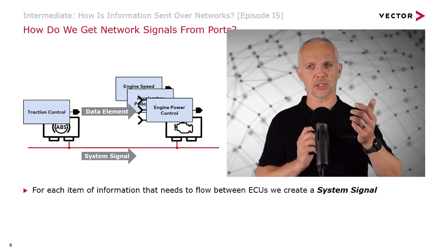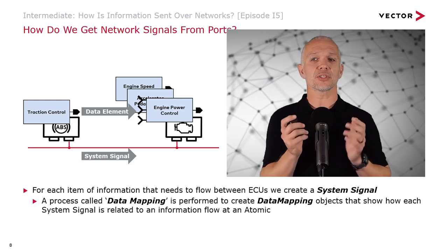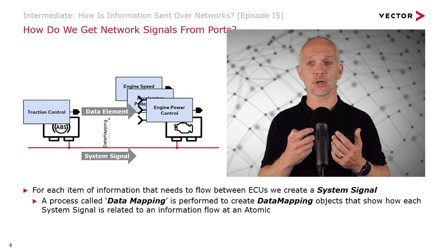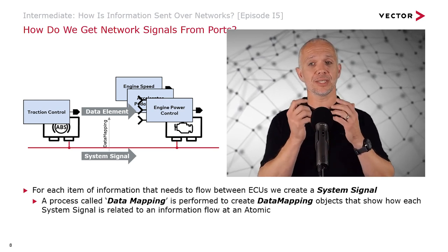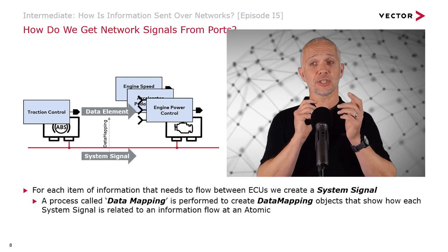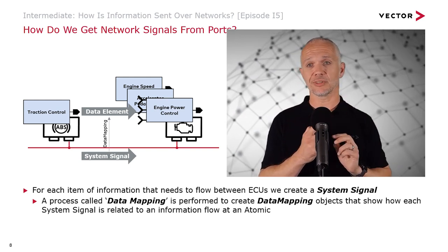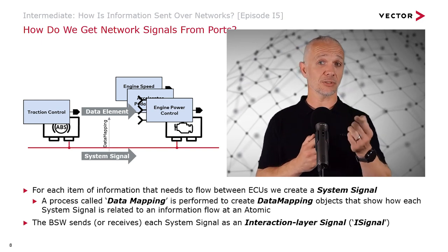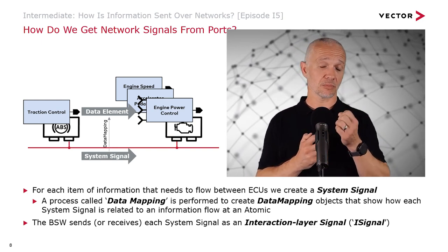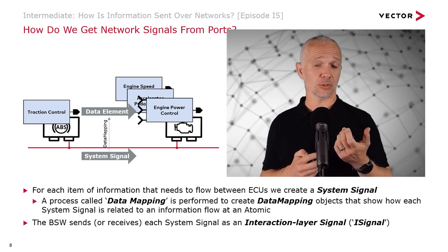How do we know which data elements correspond to which system signals? A process called data mapping is performed to create data mapping objects that show exactly which system signal relates to an information flow at the atomic level in the virtual function bus. The basic software sends or receives each system signal as an interaction layer signal, or iSignal for short.